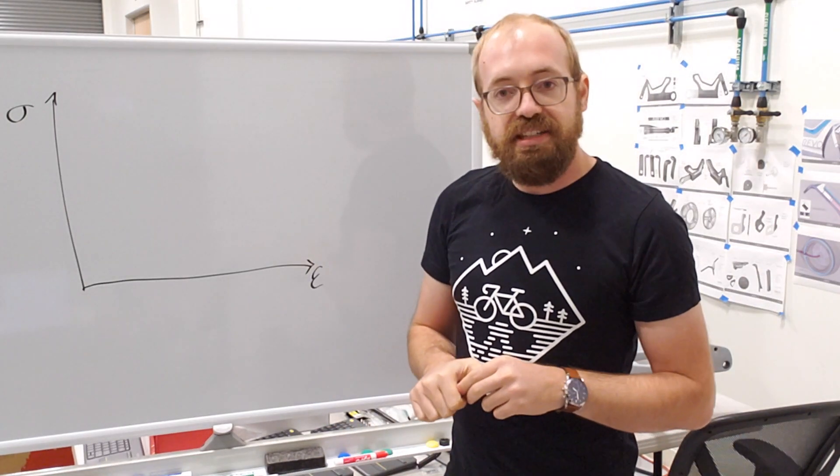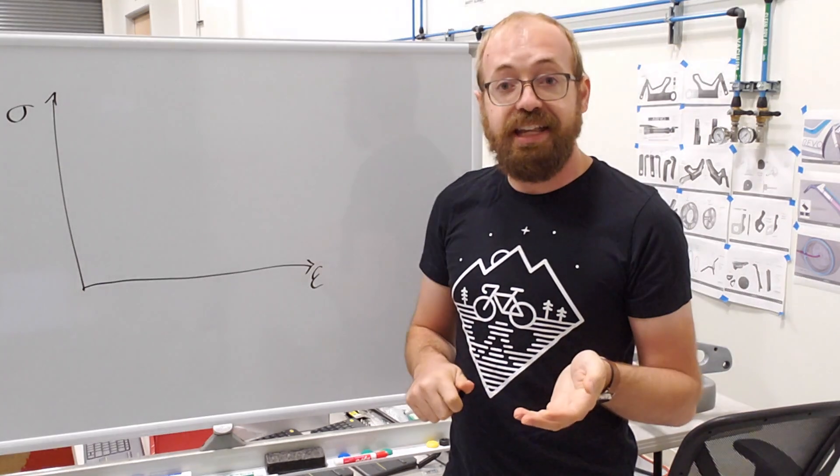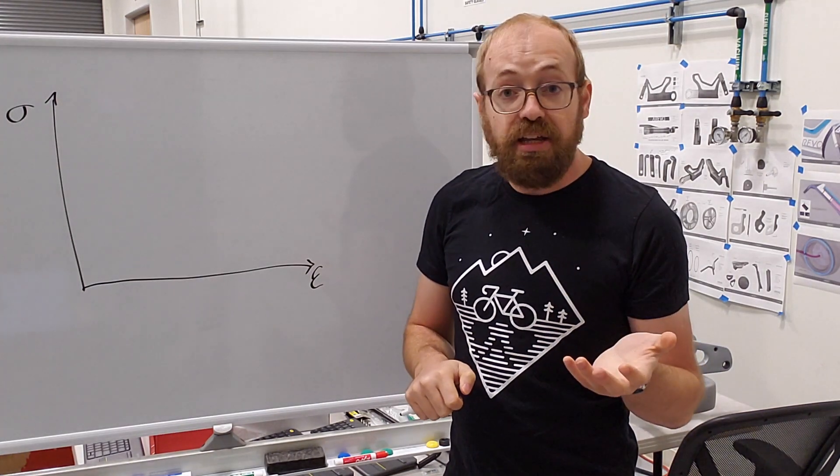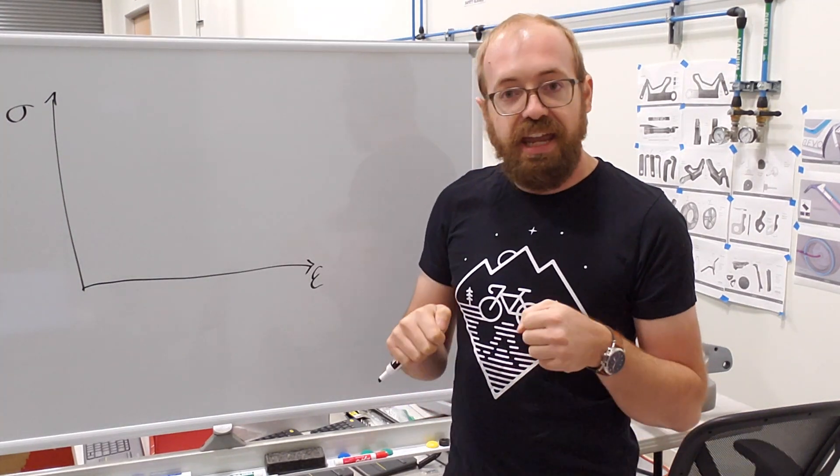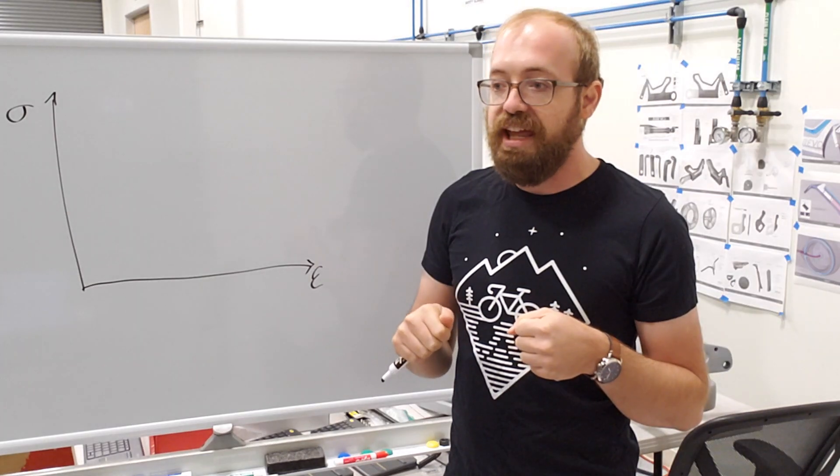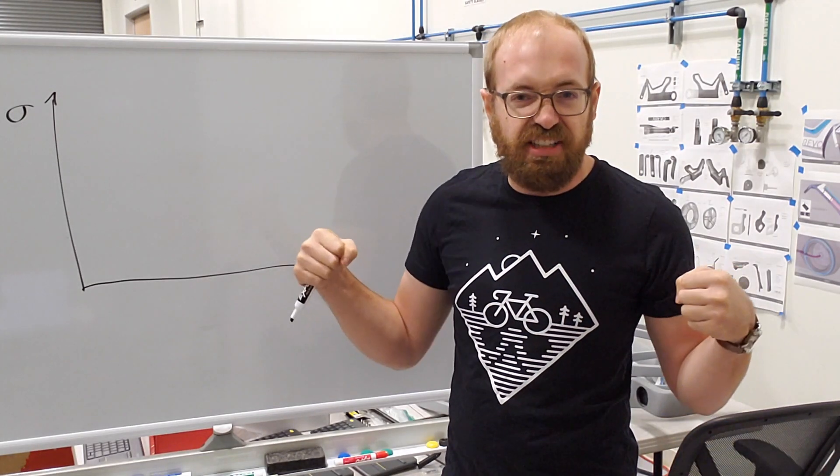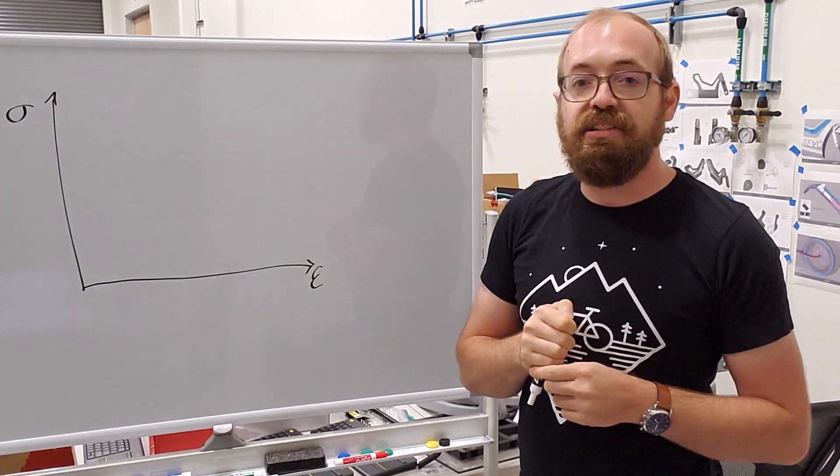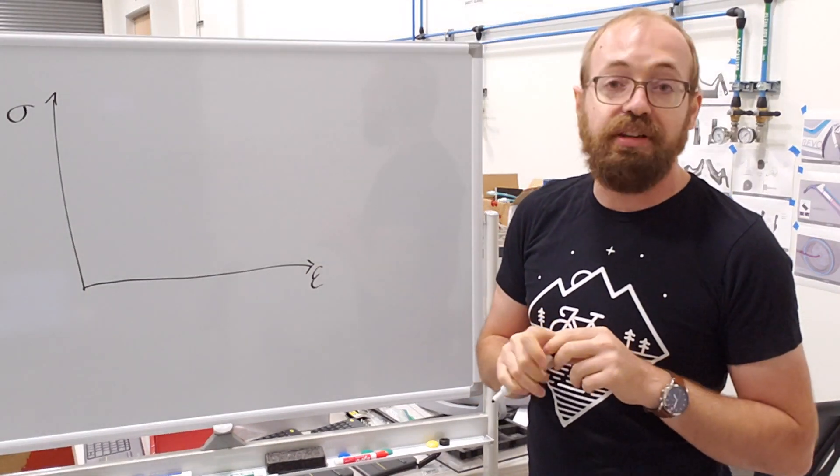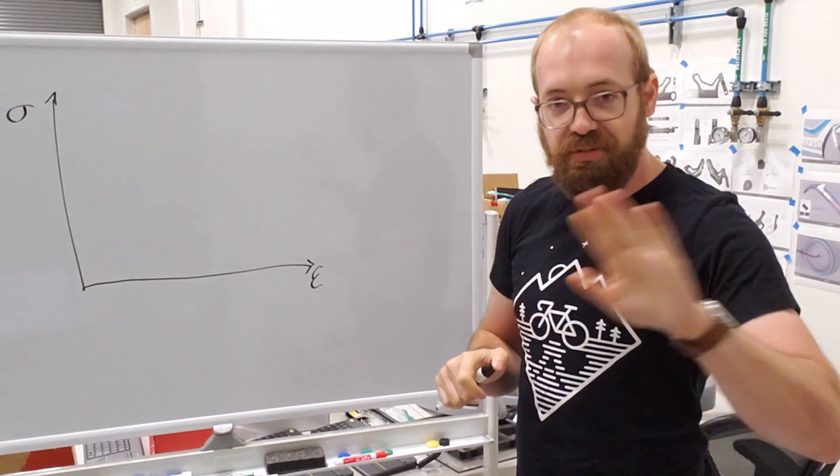A brittle failure would be indicative of a ceramic material, like a coffee cup shattering. That's very brittle failure. Whereas a ductile failure would be more like a plastic that stretches a lot before it finally snaps. A rubber band is very ductile. And maybe that's even getting into a third category of elastomers, but we won't get into that.